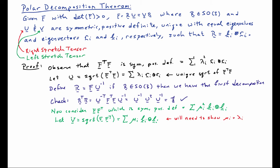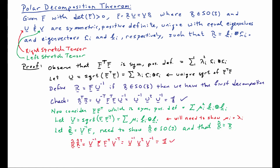The theorem states that the eigenvalues of U and V are the same, so we'll need to show μ_i equals λ_i. First, let's define R̂ to be V inverse F. We need to show R̂ is a rotation and that R̂ equals R. Computing R̂ transpose R̂: expanding gives V inverse F F transpose V inverse transpose. Noting that V is symmetric, we get V inverse V squared V inverse, which equals the identity. So R̂ is certainly orthogonal, and it is straightforward to show it has determinant plus one, confirming it is a rotation.